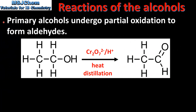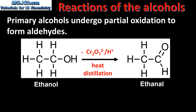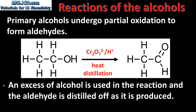We will start by looking at primary alcohols. Primary alcohols undergo partial oxidation to form aldehydes. Here we can see the partial oxidation of a primary alcohol to produce an aldehyde. The oxidizing agent is acidified potassium dichromate. The conditions are heat and distillation. An excess of alcohol is used in the reaction and the aldehyde is distilled off as it is produced.